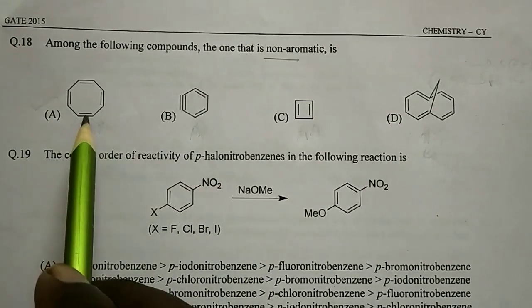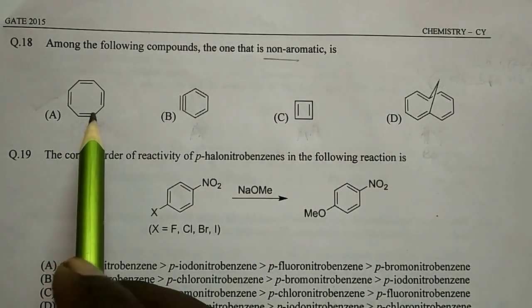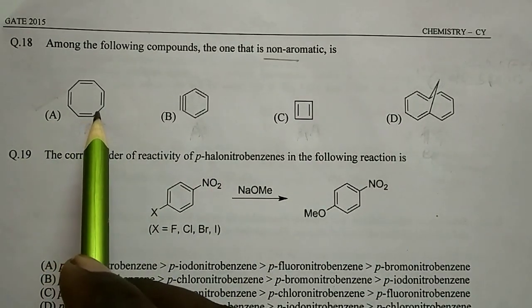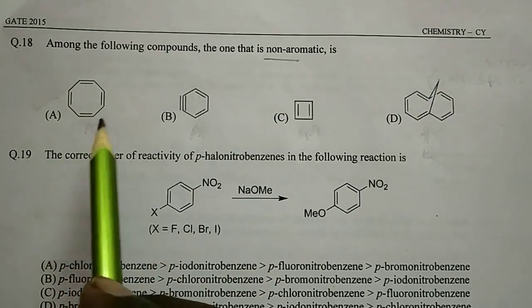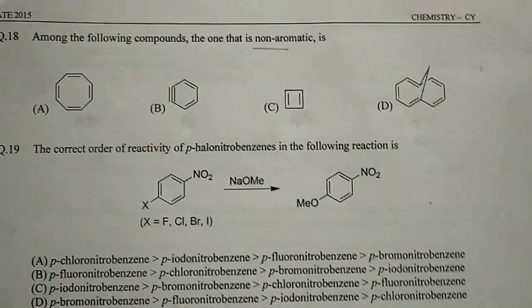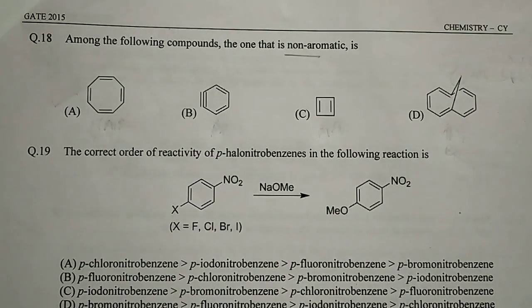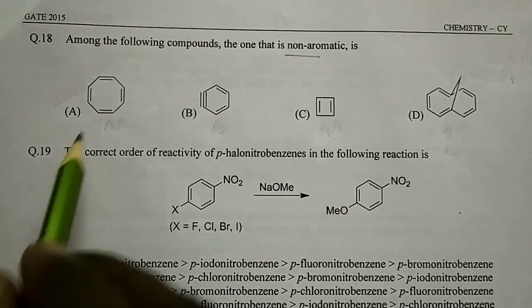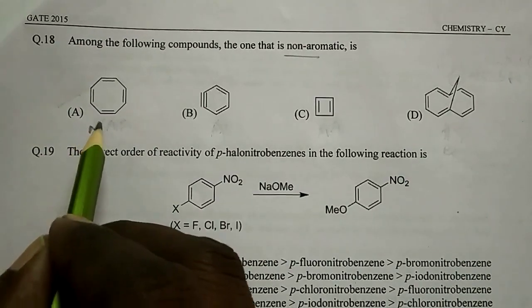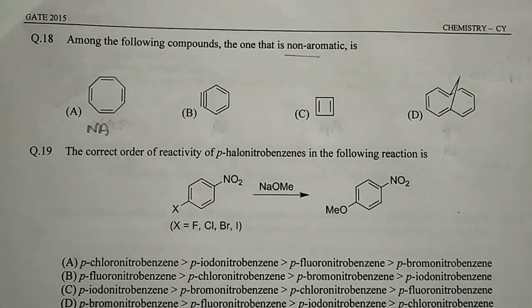This one is cyclooctatetraene, an 8-annulene. We have already seen that this molecule is not planar — it is a tub-shaped molecule. Since it is tub-shaped, planarity is absent, so this molecule is non-aromatic.